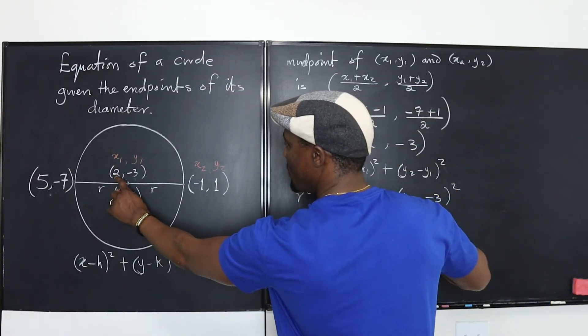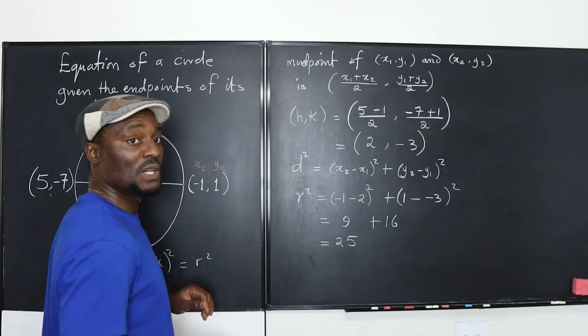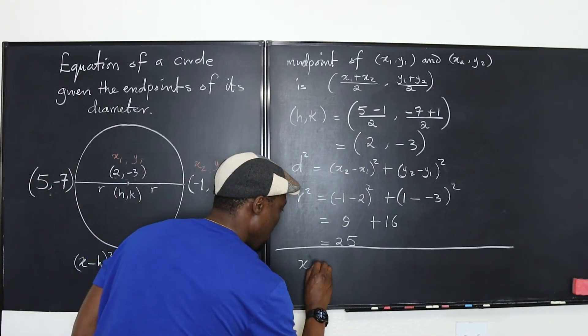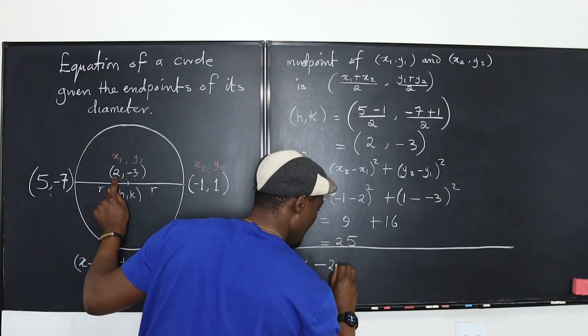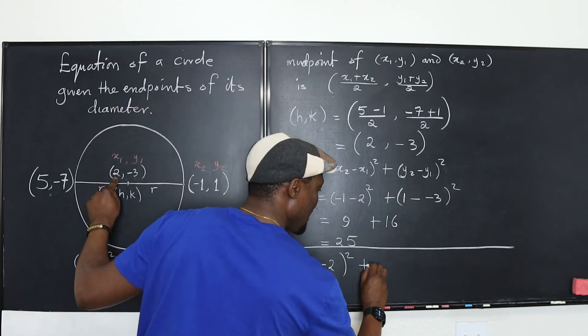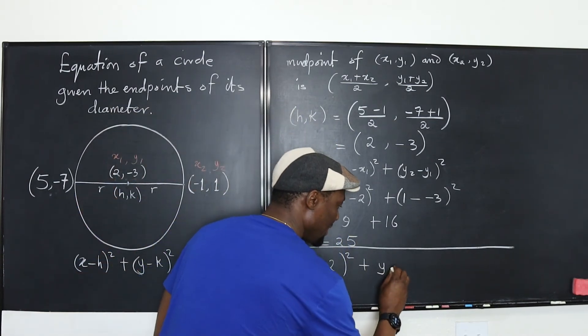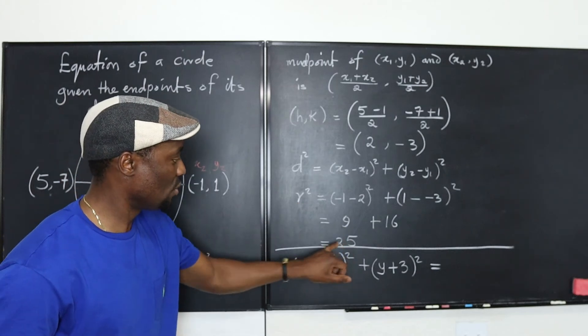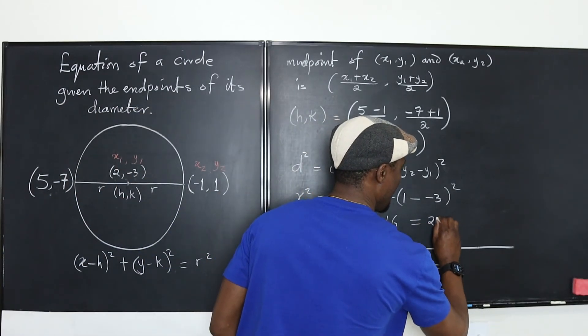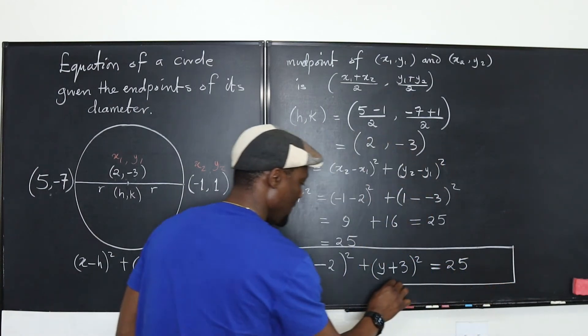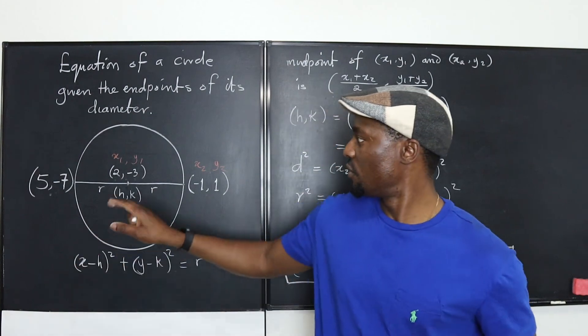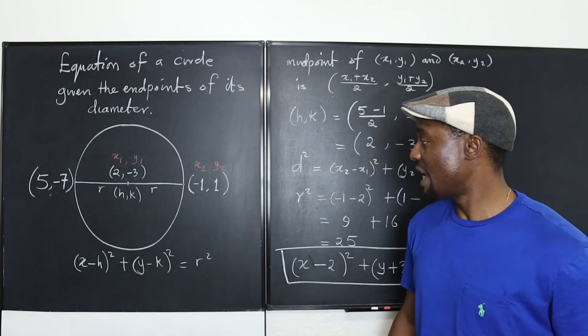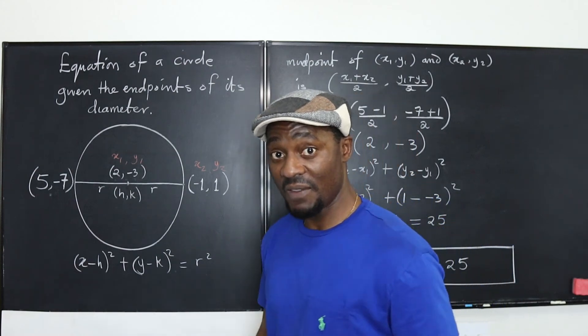So what's the equation of the circle we're looking for? Let me put a box here. Well, the equation we're looking for right now is x minus h, which is 2, squared, plus y minus negative 3, which would be plus 3 in this case, is equal to r squared. What is r squared? It's 25. I can put the 25 here, equals 25. Well, this is the equation of this circle. If all you know is the pair of endpoints of the diameter, if that's all you know, then you're good. You see how that works out?